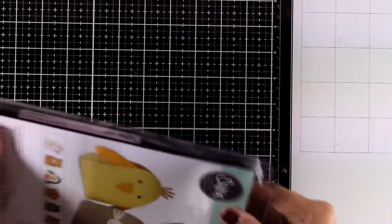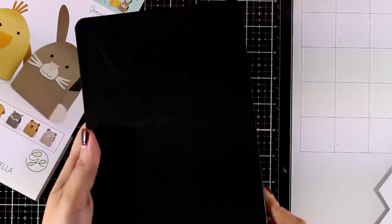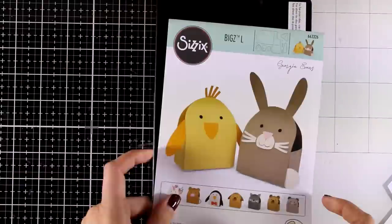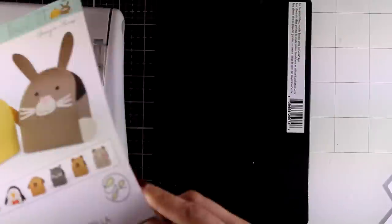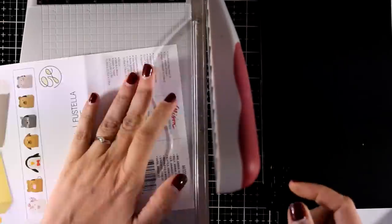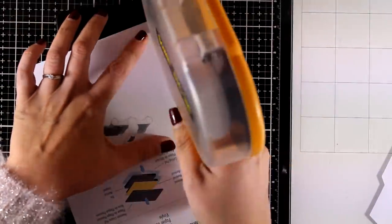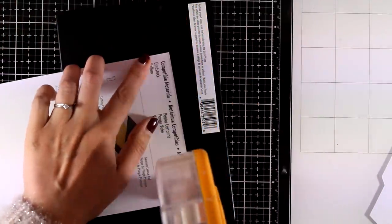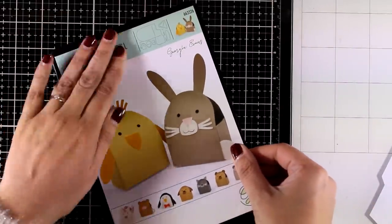This is one of their Bigz dies, which means it cuts out not only paper but also heavy cardstock, fabric, felt, and so many different materials. I'm going to show you how I like to store these Bigz dies. Since they are black you can't really tell what it cuts out, so I always keep the paper from the packaging, cut it out to size, and stick it at the front of my die. This way when I browse my dies I always have an image in front so I know exactly what I'm looking for.